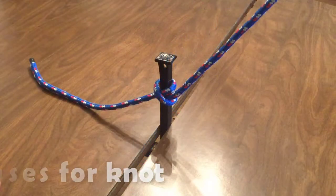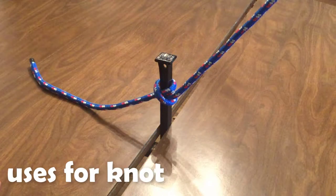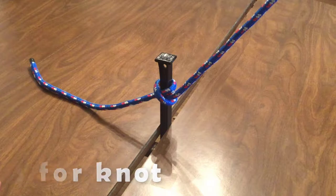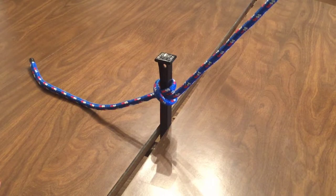The clove hitch can be adjusted easily, making it a great universal hitch to use for securing to a post or other object. Its adjustability is helpful for tightening lines such as the guy lines on your tent.